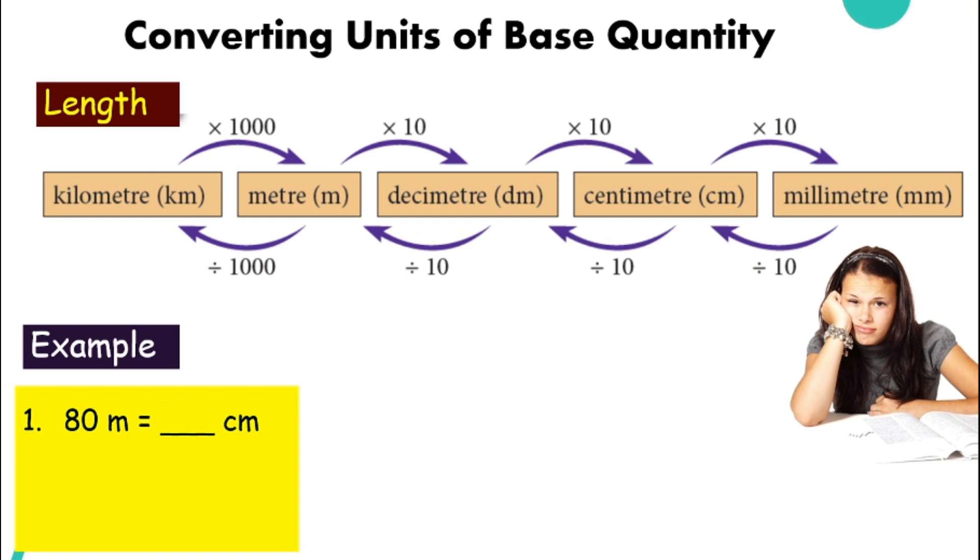First, what is 80 meter in centimeter? So take a look at this diagram. Where is the meter? It's over here. And centimeter is over here. There are two jumps. So meaning you need to take 80 times 10. It reached decimeter. It's not a centimeter yet. So we have to do another one times another 10. Now we are at our destination, which is centimeter and you will get 8,000 centimeter.